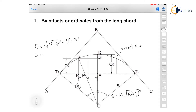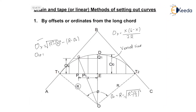When the radius of the curve is large compared to the length of the curve, the offset may be calculated using an approximate formula. This is the exact formula, but when the radius is very large we can find the offset using the approximate formula: ox equals L multiplied by x times (L minus x) divided by 2R. This formula is useful when the radius is too large.